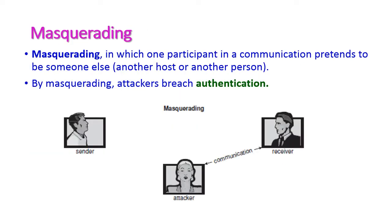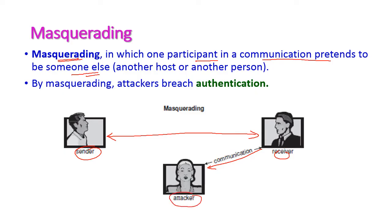Apart from these four violations, some others also exist. The first is masquerade, where one participant in a communication pretends to be someone else. The sender and receiver are communicating, but without the sender's knowledge, the receiver can pass all information to the attacker. By masquerade, attackers breach authentication.